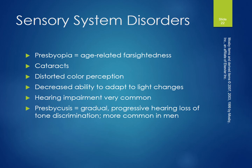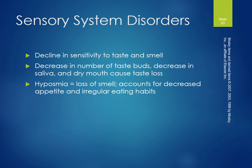Sensory system disorders include presbyopia, an age-related farsightedness, cataracts, disoriented color perception, and decreased ability to adapt to light changes. Hearing impairment is very common — presbycusis is a gradual progressive hearing loss of tone discrimination and is more common in men. There is also a decline in sensitivity to taste and smell, with a decrease in numbers of taste buds.